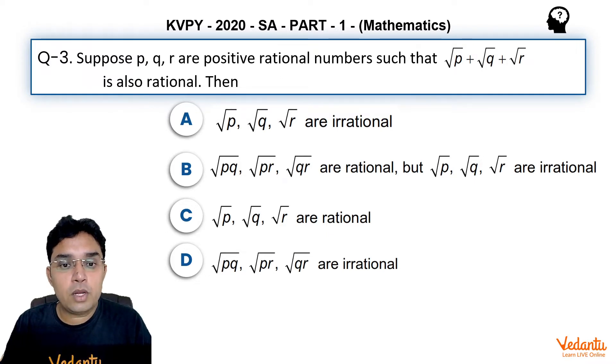Option C: √p, √q, √r are rational. Option D: √pq, √pr, √qr are irrational.